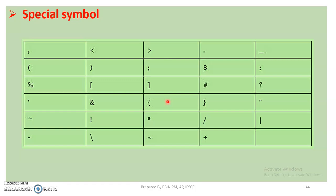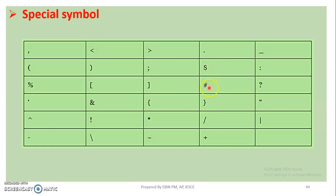Next are special symbols. We can use a special type of symbols. The next one is asterisk, then double dash. They use a number sign, dollar sign, semicolon, colon, percentage sign, left bracket, right bracket, hash symbol.